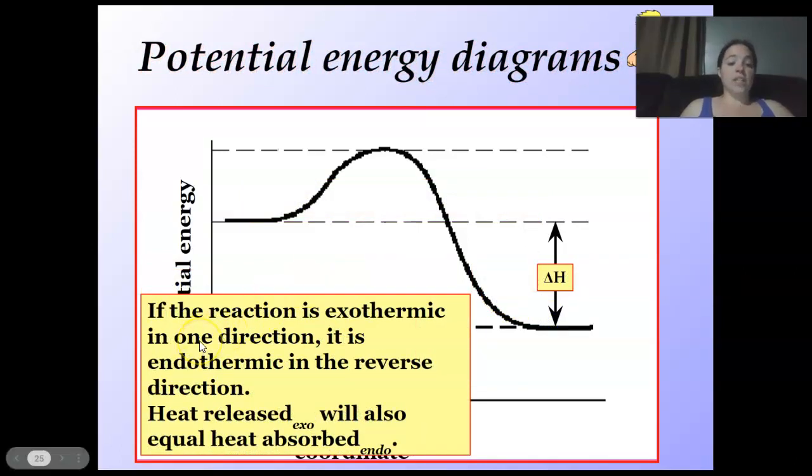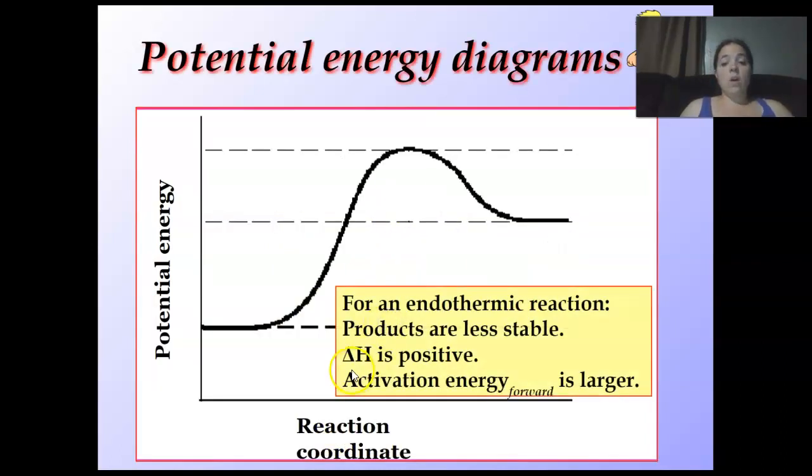If the reaction is exothermic in one direction, it is endothermic in the opposite. Going this way, it's exothermic. Going back, it'll be endothermic. The heat released will also be equal to the heat absorbed. Right here, the heat of reaction. For endothermic reaction, the product is up here, meaning it's less stable than the activation energy, or the forward energy.